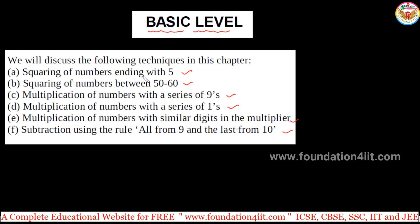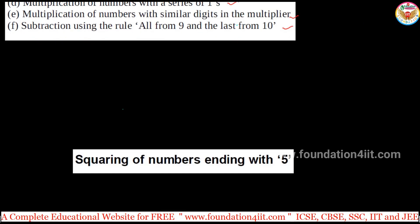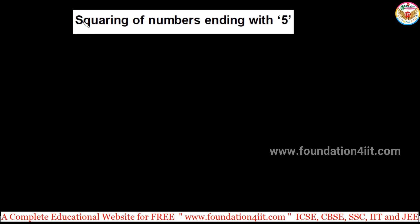Let us start with squaring of numbers ending with 5. For specific particular combinations only, we can use this specific technique. Let us take one number ending with 5. If you want to multiply 65 squared, that means 65 is multiplied with 65. How to do this without normal multiplication?